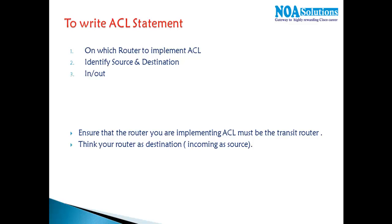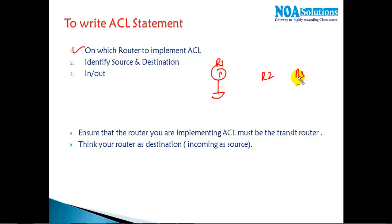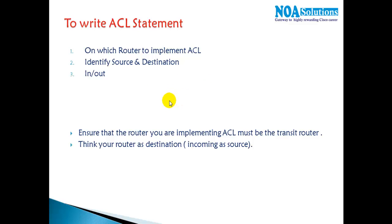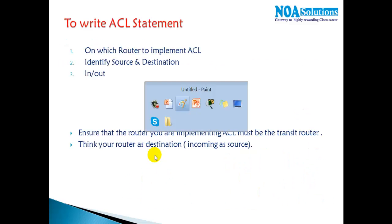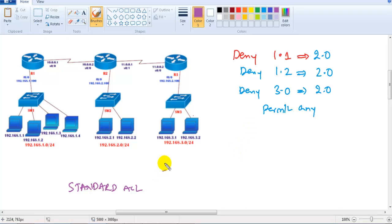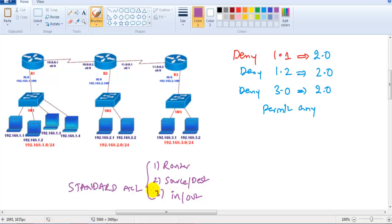The first thing is deciding on which router to implement. You need to ask yourself: Router 1, Router 2, or Router 3? Second, you need to decide who is the source and who is the destination. Third, you need to decide the direction. Let's go through each one.